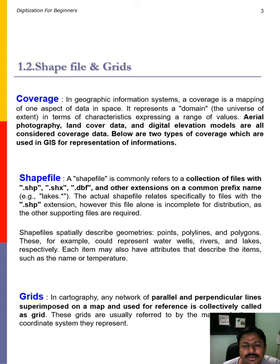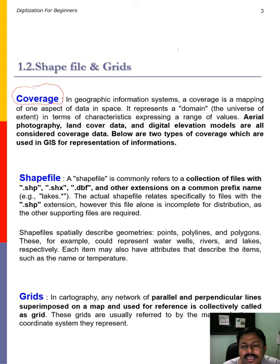Let us move into some very important definitions related to GIS. A coverage is a mapping of one aspect of data in space. It refers to the way you can represent data of geo-referenced points, lines, or polygons. The way you can represent and present that is collectively known as coverage.